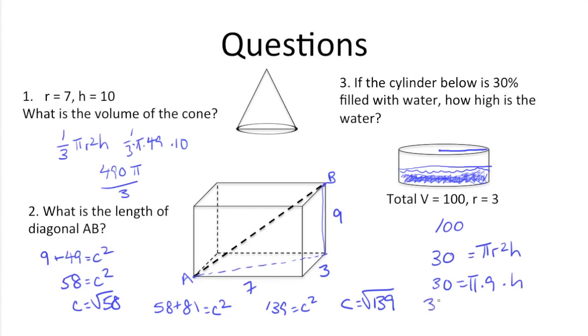All we have to do now is solve for h to find the height. So we have 30 is equal to 9 pi h. Divide both sides by 9 pi, and we get 30 over 9 pi, which simplifies down to 10 over 3 pi.